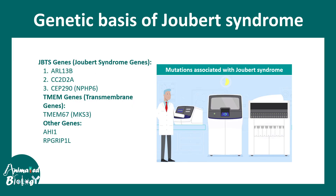Joubert syndrome is associated with many gene mutations such as ARL13B and CC2D2A. These are genes that regulate the primary cilium in the brain. There are other genes which are also associated with this condition.